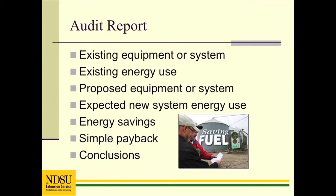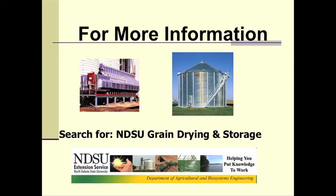A grain drying energy audit report will normally include the existing system, existing energy use, proposed system, expected energy use, energy savings, simple payback, and conclusions. Assure that the person conducting the audit is familiar with grain drying in addition to being competent in conducting an energy audit. More information is available on the web; my website can be found by doing an internet search for NDSU grain drying and storage.